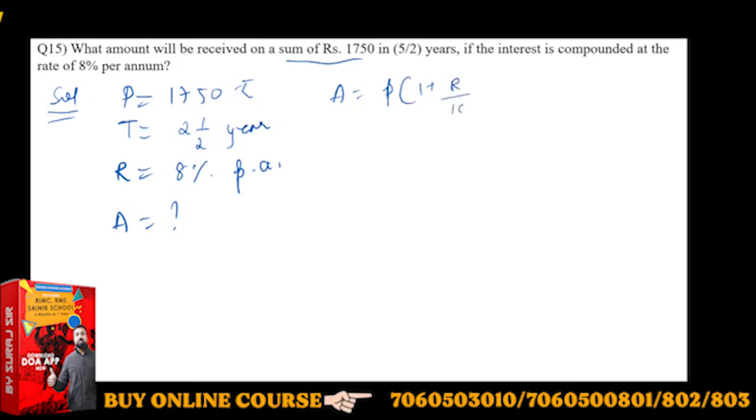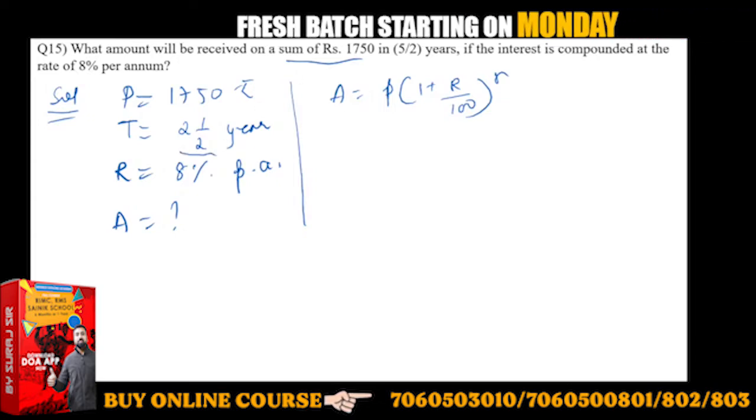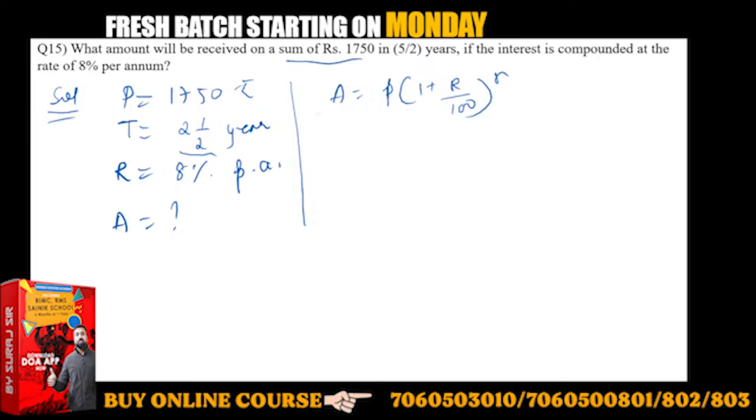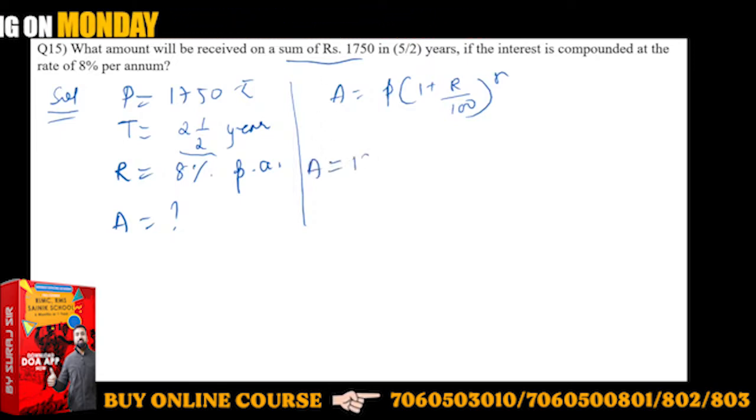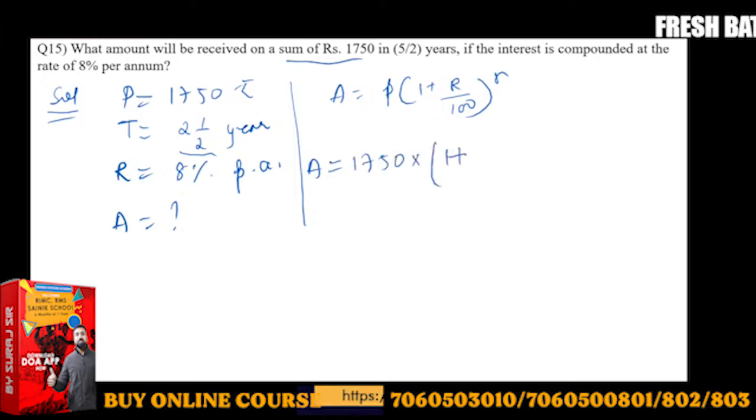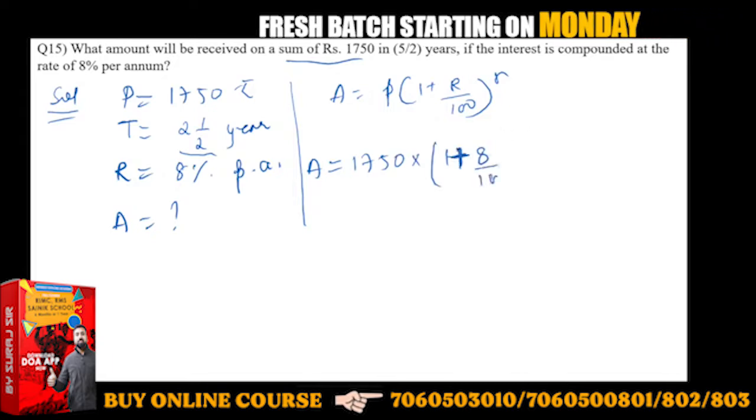Do you know this formula? Amount equals principle times (1 + R/100) to the power n. We have to use this formula, but here the time is two and a half years. For two years, A = P, which is 1750, into bracket 1 plus rate. Rate is 8% per annum, so 8 upon 100, and for two years there are two periods, so to the power 2.